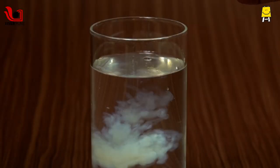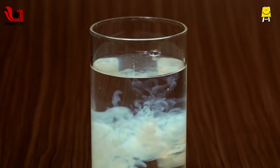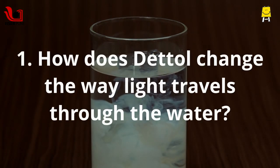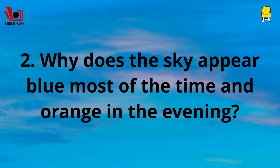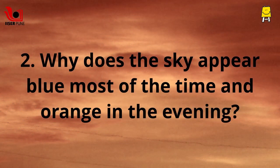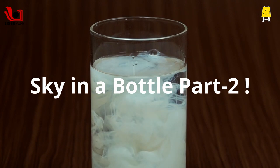How does that all change the way light travels through the water? How does this activity explain why the sky appears blue most of the time and orange in the evening? Find out more in the next part.